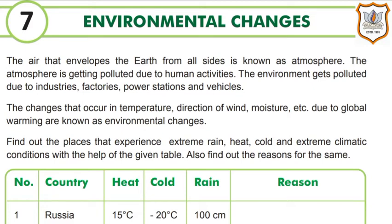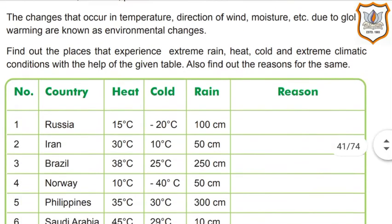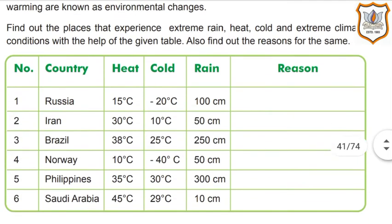One table is given in your textbook about the places that experience extreme rain, heat, cold, and extreme climatic conditions. With the help of the table, you should find out the reason for the same.